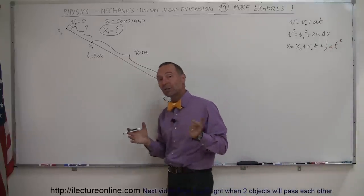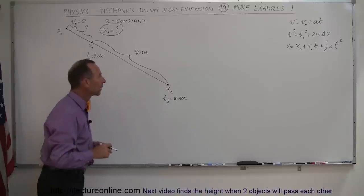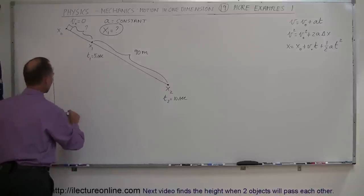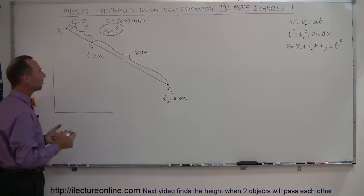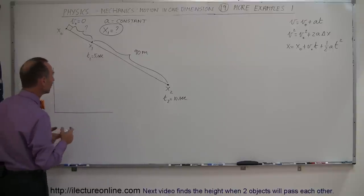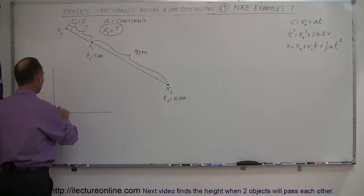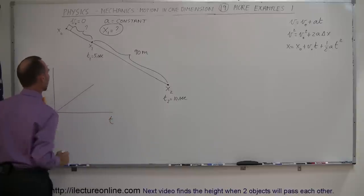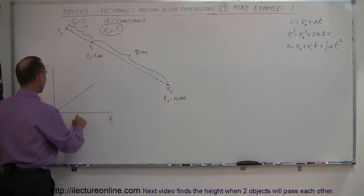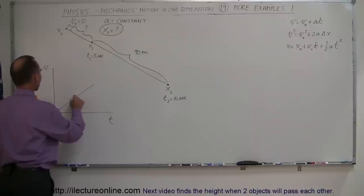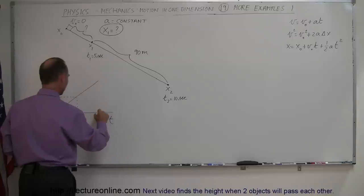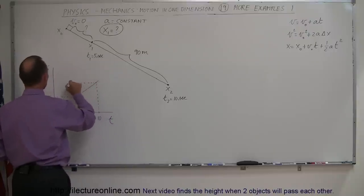Notice that we know the acceleration is constant — we just don't know what it is. So the first way we can think about it is to graph what's happening here. The velocity is increasing at a constant acceleration and it starts at zero, so if we plot v versus t it'll look like a straight line. After five seconds it will have reached point x1, and after an additional five seconds — ten seconds total — we will have reached a distance of x2.